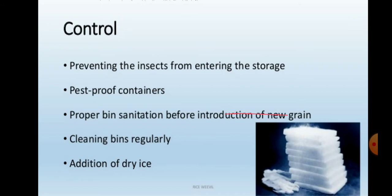Control measures include: properly drying and storing grains before storage, fumigation, cleaning storage areas, and collecting and destroying infested material. Prevention involves stopping insects from entering storage facilities.